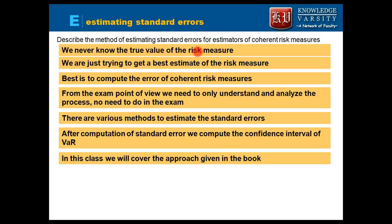We never know the true value of the risk measure — we are always trying to get a best estimate. So when you get an estimate, there has to be some error. What is expected is that you get both an estimate of the risk measure and an estimate of the error in your computation.